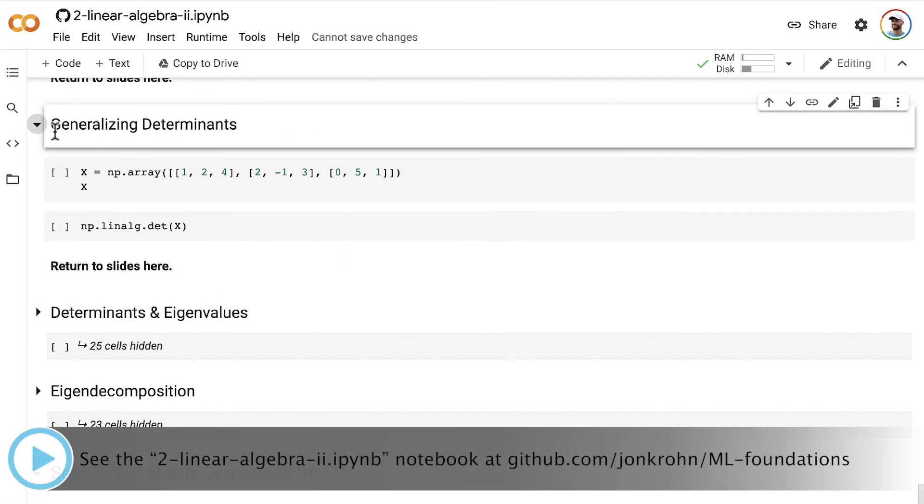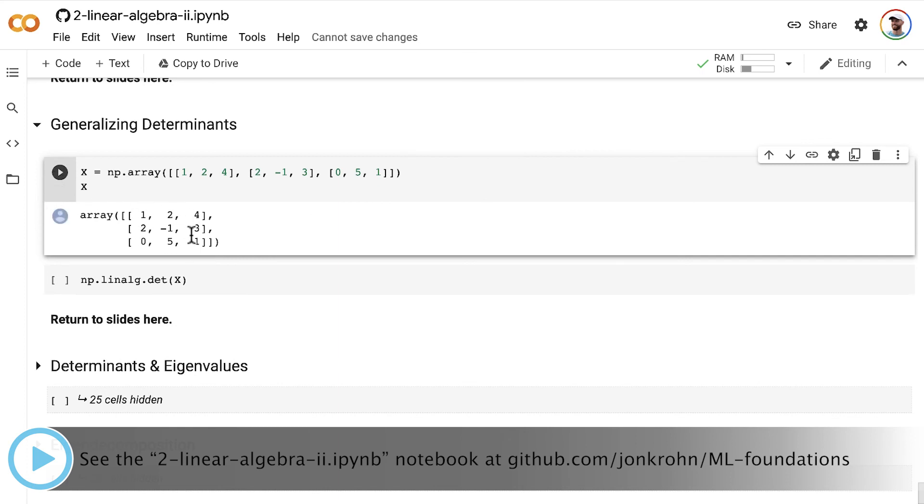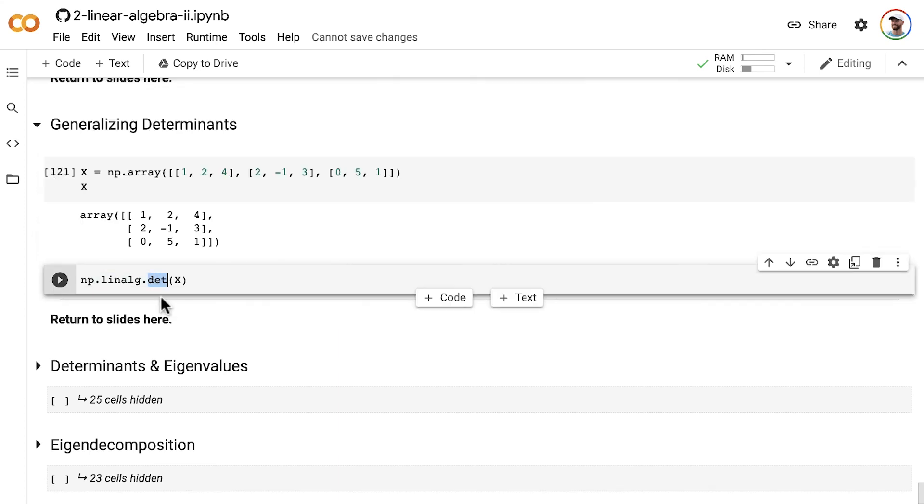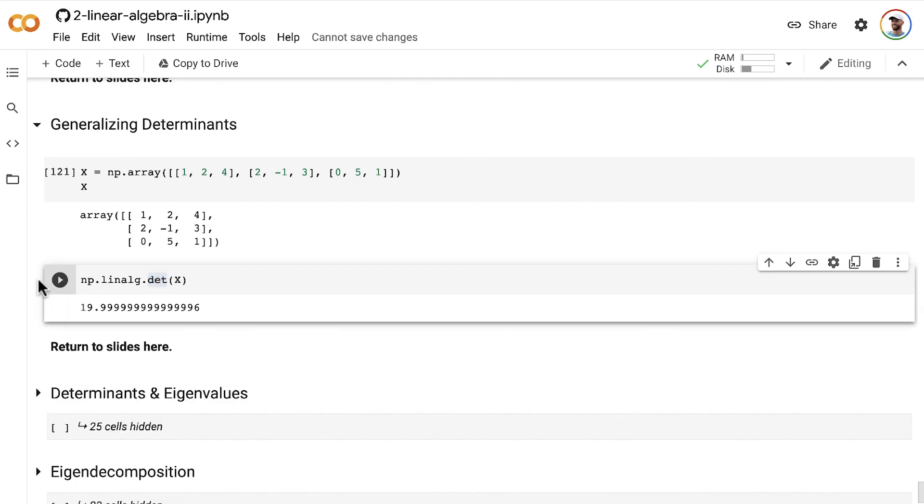Alright, so in the generalizing determinants section of our linear algebra 2 notebook, I'll use NumPy to create the same 3x3 matrix as we had on the slide a moment ago. And we can use the NumPy determinant method, det method, from the linear algebra module to calculate that, indeed, the determinant of our matrix X is, notwithstanding an extremely small amount of rounding error equal to 20. Great. Feeling confident that you could calculate determinants by hand on your own? Up next are exercises to confirm your confidence.